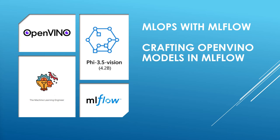First of all, converting a model. Today we will use a Phi 3.5 Vision. We will convert the model to OpenVINO IR format. And then we will do a compression using the library NNCF from Intel as well. And finally we will be logging the model into MLflow. Creating a custom Python model for that model, we will log the model into MLflow. And then we will load the model from the model registry and do some inference examples.